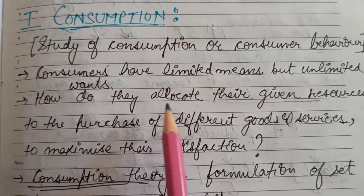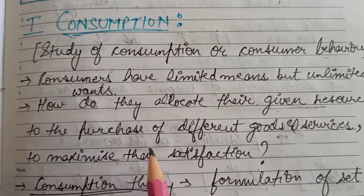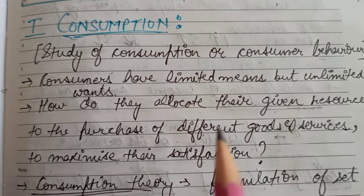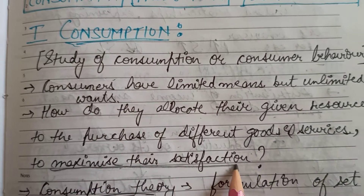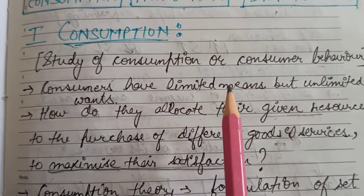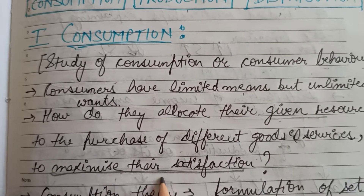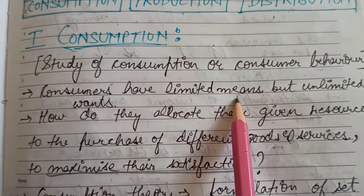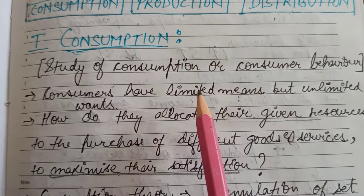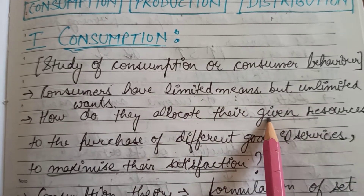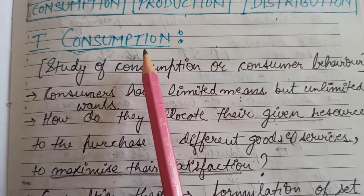We can say that how do consumers allocate their resources to the purchase of different goods and services, or how will they maximize their satisfaction. A consumer has the motive to always maximize their satisfaction. They are provided with limited resources but want to maximize satisfaction within those limited resources. This is known as consumer behavior, which we study under consumption.